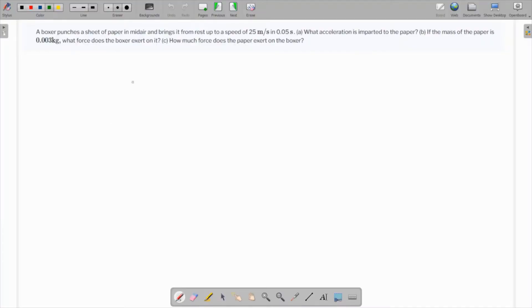In this question, a boxer punches a sheet of paper in midair and brings it from rest to a speed of 25 meters per second in 0.05 seconds. So it starts from rest, the final speed is 25 meters per second.